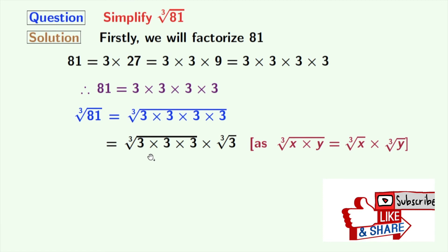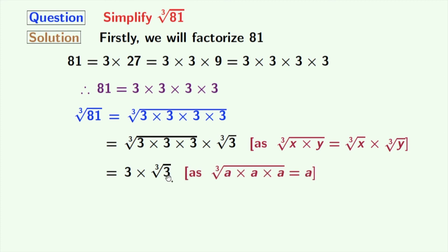Now from the first cube root, we get 3 and the second cube root remains as cube root of 3. In the first cube root, we have used the rule of cube root of a times a times a is equal to a, where a is 3 here. After multiplication, we get 3 cube root of 3 and this is our final answer.